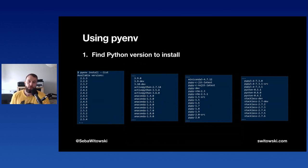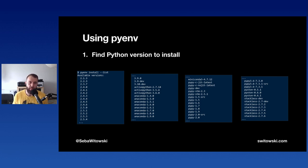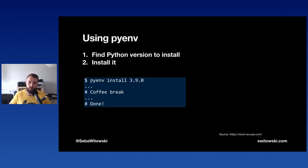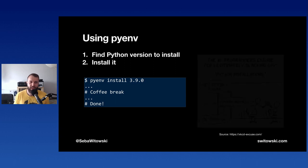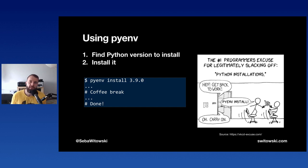Once pyenv is installed, use it to install new Python versions. Run `pyenv install --list` to see all available versions — standard CPython versions starting with a number, plus Anaconda, Miniconda, PyPy, and more. Once you select a version, run `pyenv install` with the version number and go make yourself a coffee — installation takes a few minutes. There are prerequisite libraries like OpenSSL you should pre-install; check the GitHub repo for the recommended prerequisites.